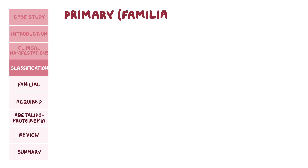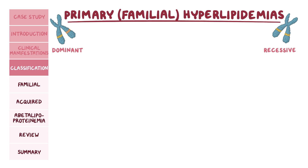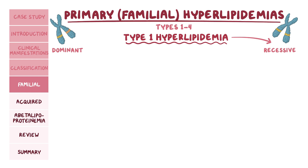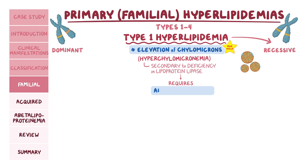Let's look at the primary or familial hyperlipidemias, which are inherited in either an autosomal dominant or recessive manner. The most high-yield ones often tested on exams are types 1 through 4. Type 1 hyperlipidemia is an autosomal recessive disorder characterized by elevation of chylomicrons in the blood, so it's also referred to as hyperchylomicronemia. This occurs secondary to a deficiency in lipoprotein lipase. This enzyme also normally requires a cofactor called apolipoprotein C2, so deficiency of this cofactor can also lead to type 1 hyperlipidemia.